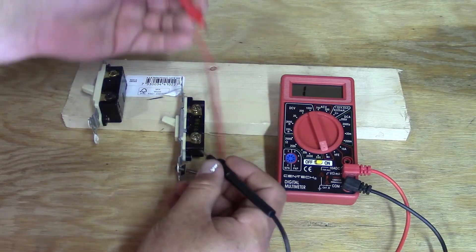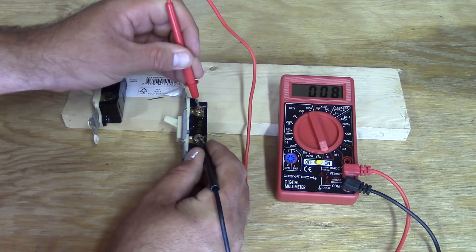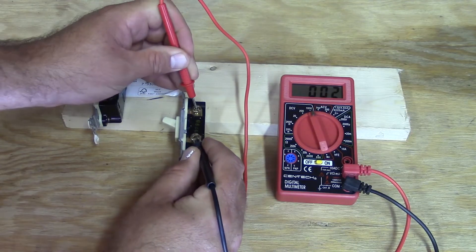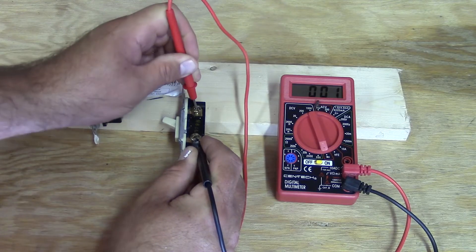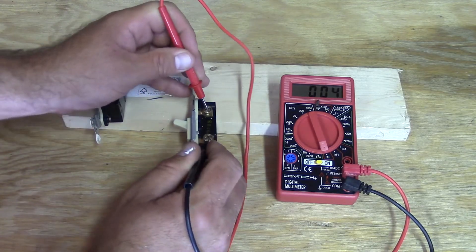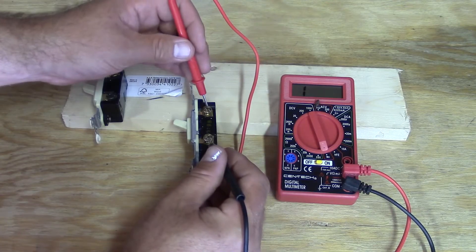So we're going to put our leads across like this on the switch. Now when you're doing this, you want nothing else connected to it because that'll throw you off, and there's always a danger of having power going to something. So make sure your power's off, your leads are disconnected, and you just got the raw switch like this.